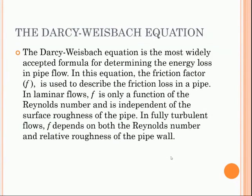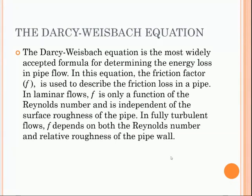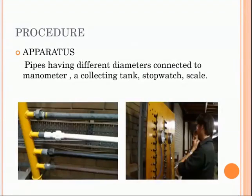For laminar flows, friction factor F is only a function of the Reynolds number and is independent of the surface roughness of the pipe. Laminar flow is where the fluid travels smoothly or in a regular path. The Reynolds number refers to the ratio of inertial forces to viscous forces within a fluid. The formula is H = fLV² / (2gD), where H is the head loss, F is the friction factor, L is the length of pipe, V is the velocity of the incompressible fluid, D is the diameter, and g is the acceleration due to gravity.